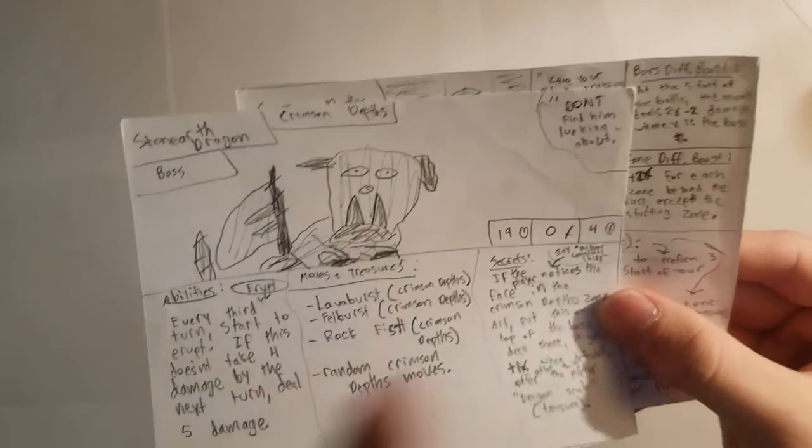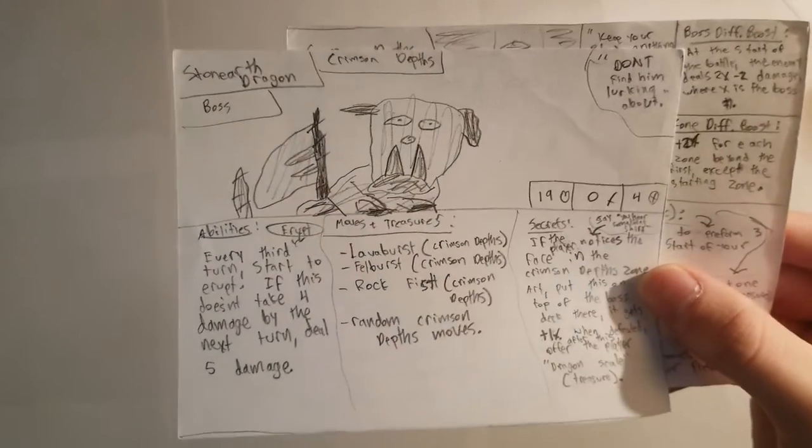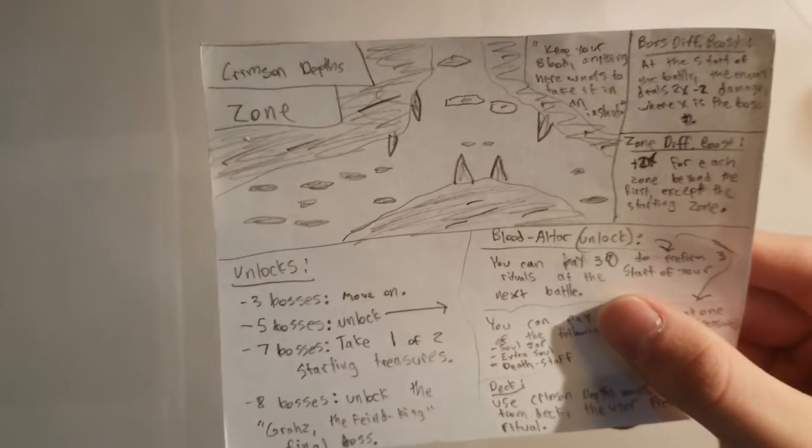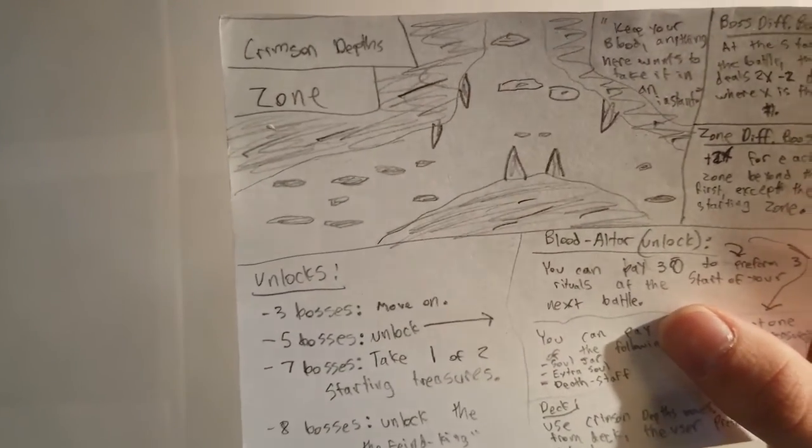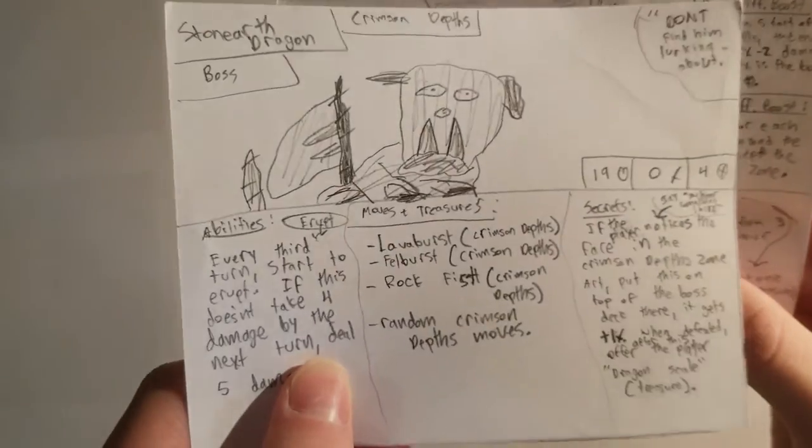And then when you look at this guy's slayer text, you don't find him lurking about. And when you look at this zone, he's in the background. So his secret is, when you see him in the background, he gets angry, shows up with extra attack, and gives you special loot.